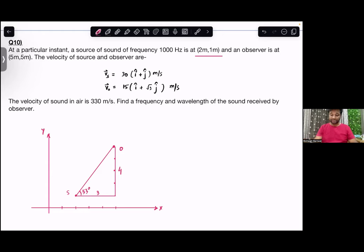The source moves 30 i-cap, 30 j-cap, which means 45 degrees. So here we can see that this is velocity of source and this is 45 degrees.